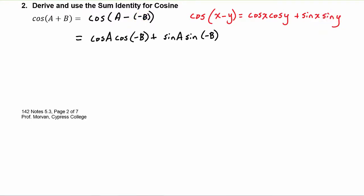Now let's remember our negative angle identities. We know that the cosine of negative b is equal to the cosine of b, because cosine is even. And the sine of negative b is equal to negative sine b, because sine is odd. So we're going to substitute those values in.